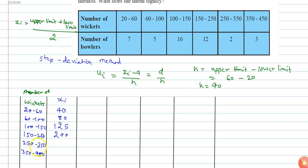Next, 250 plus 350 divided by 2 equals 300, and similarly here 400. Here a is the assumed mean.